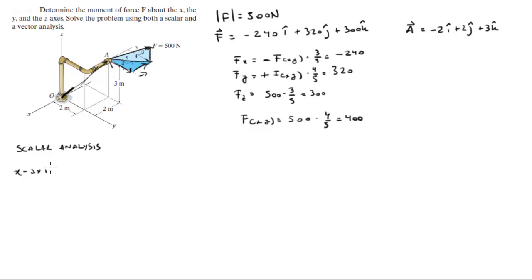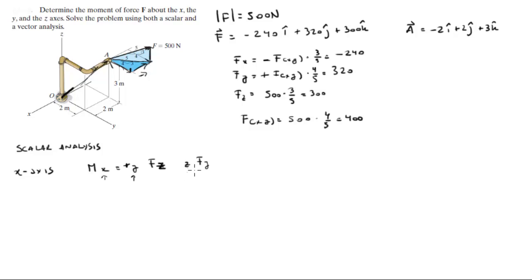Scalar analysis — starting with the X axis. The moment about X uses the other two components: y times Fz minus z times Fy. Using the right-hand rule: aim fingers toward Y and close toward Z — thumb points in positive X; aim toward Z and close toward Y — thumb points negative X. Substituting the numbers: 2 times 300 minus 3 times 320 equals negative 360 newton-meters.